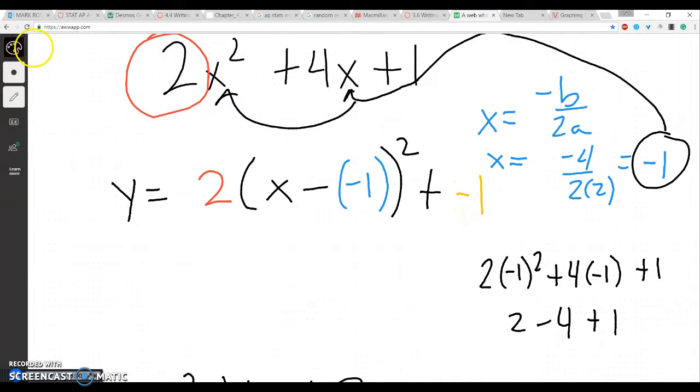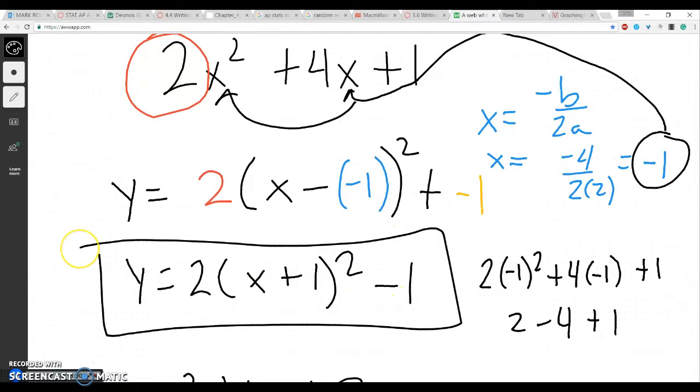So if I wanted to write this a little bit nicer, it would be y equals 2(x plus 1) squared minus 1. Let's try one more example.